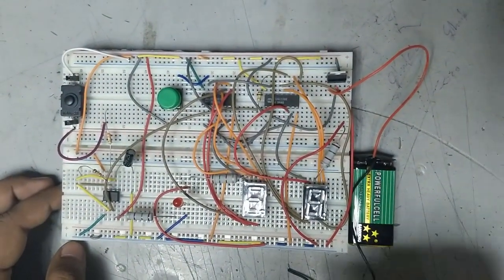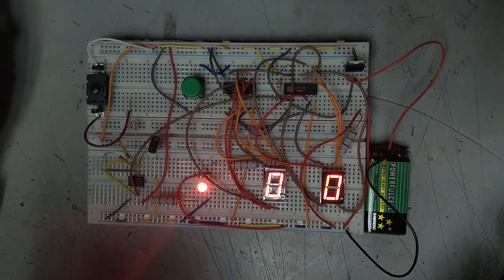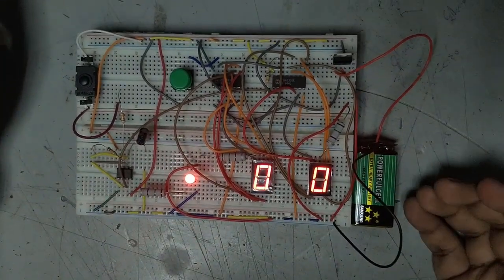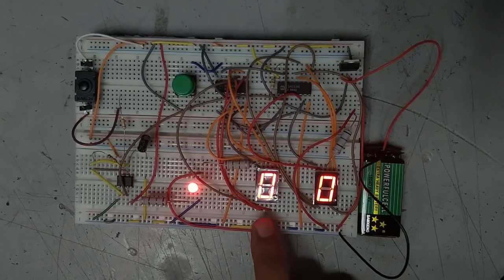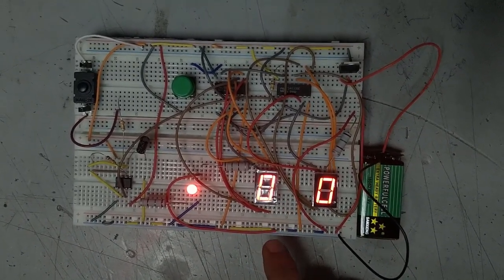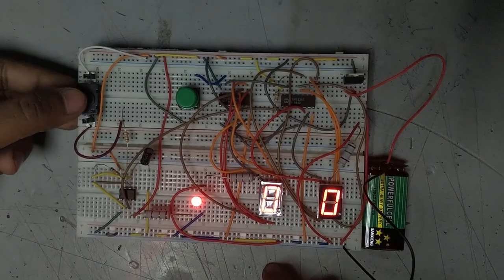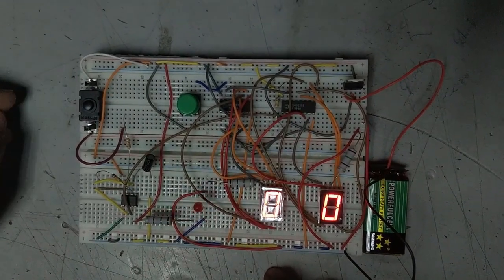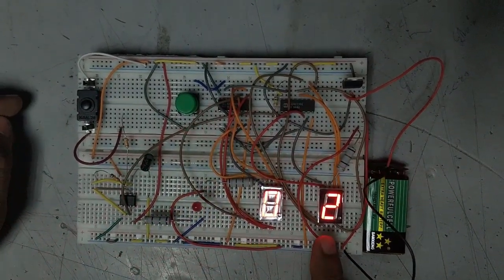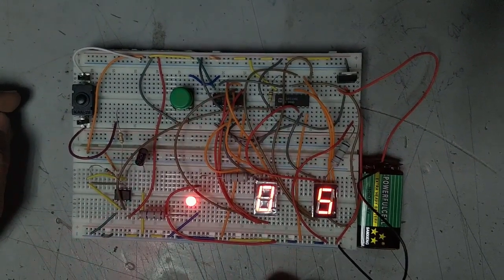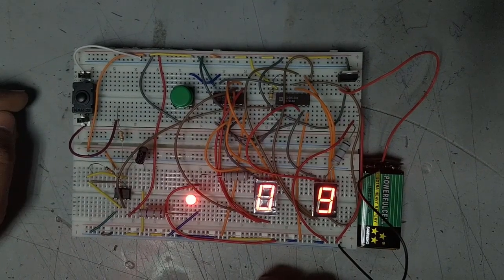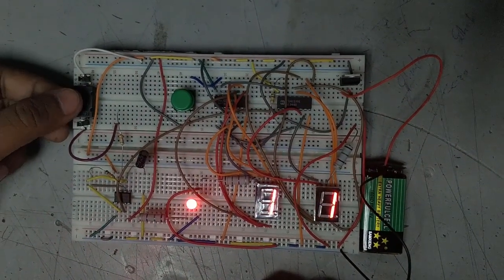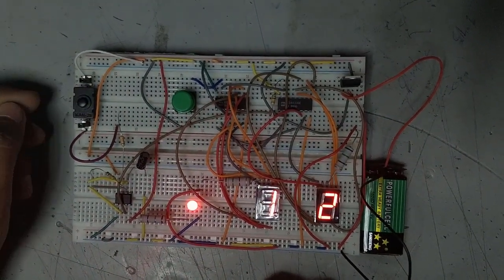So now let's connect the battery with the circuit. Here 00 is showing on the seven segment. Let's press the start button. Now it's showing one, yes. Now stop this by tapping the stop button. It has stopped.